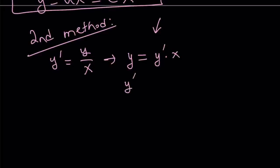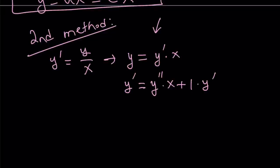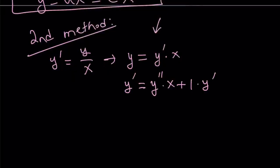Differentiating both sides: differentiating y gives y prime, and differentiating y prime gives y double prime. Using the product rule on the right side gives y double prime times x plus y prime. So we have y prime on both sides — y prime cancels out, leaving us with y double prime x equals zero, which means again x cannot be zero, so y double prime has to be zero.